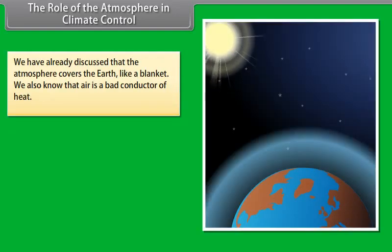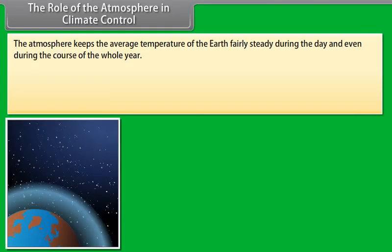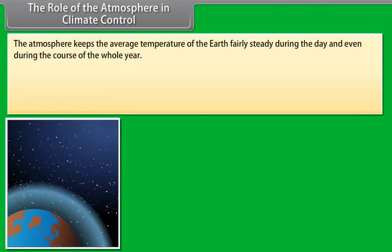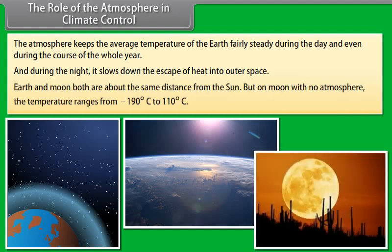The role of the atmosphere in climate control. We have already discussed that the atmosphere covers the earth like a blanket. We also know that air is a bad conductor of heat. The atmosphere prevents the sudden increase in temperature during the daylight hours. The atmosphere keeps the average temperature of the earth fairly steady during the day and even during the course of the whole year. And during the night, it slows down the escape of heat into outer space. Earth and moon both are about the same distance from the sun. But on moon with no atmosphere, the temperature ranges from minus 190 degrees Celsius to 110 degrees Celsius.